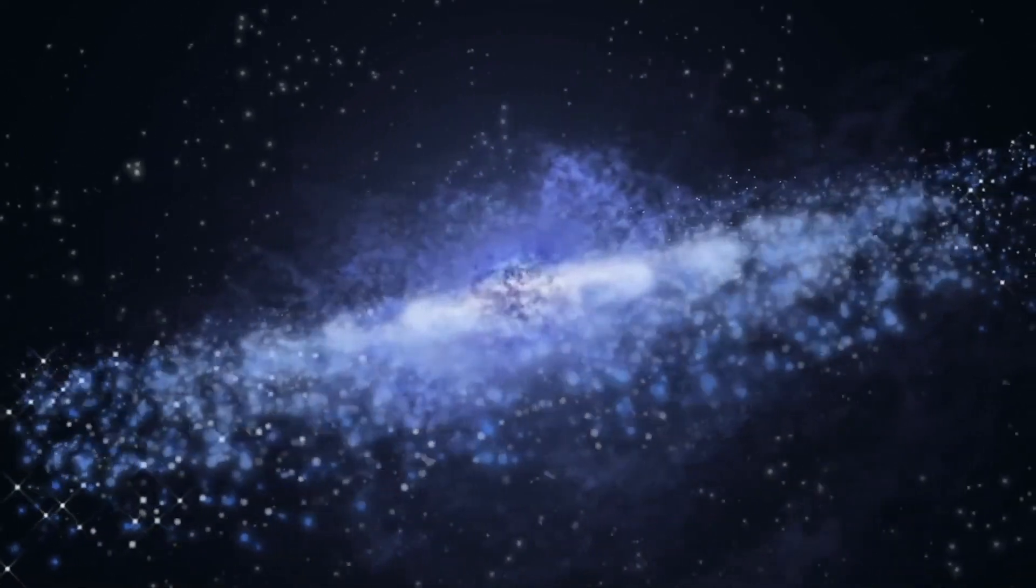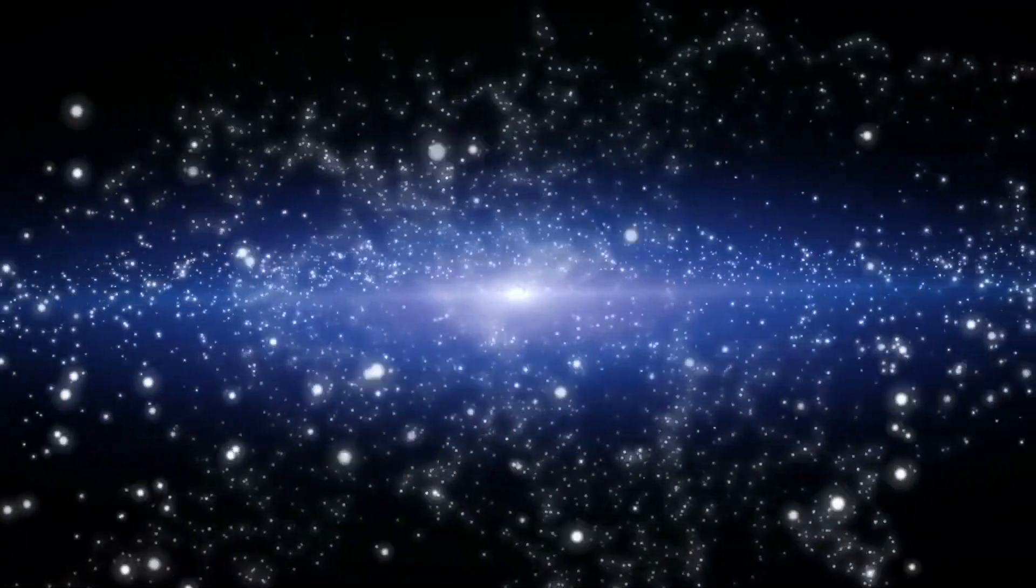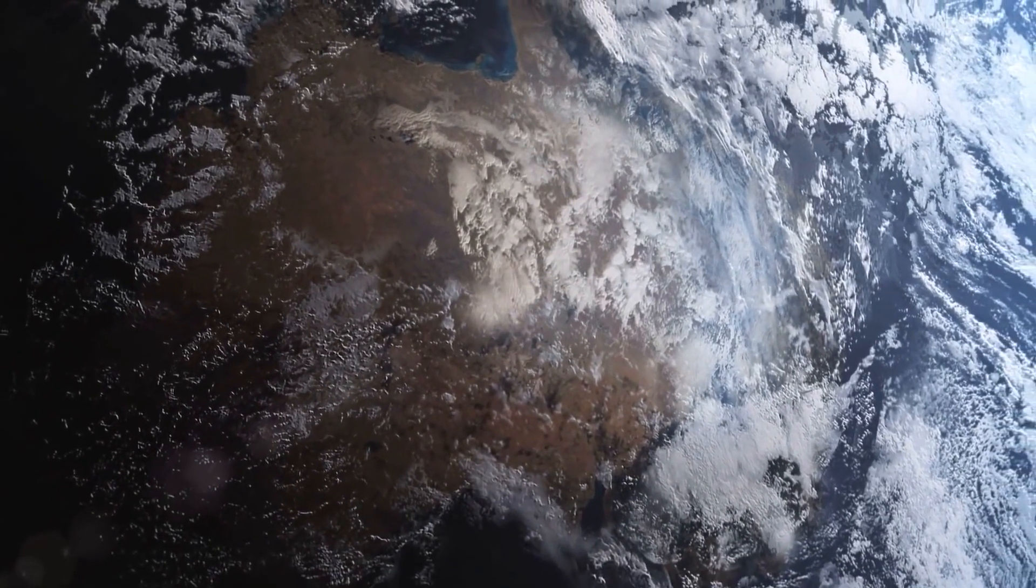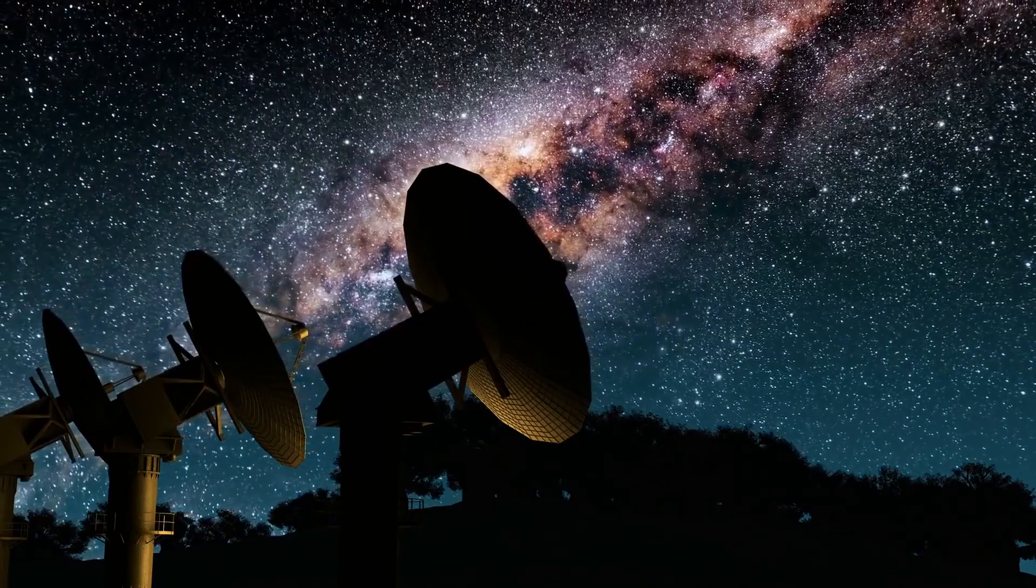As the cloud collapses, the material at the center begins to heat up. Known as a protostar, it is this hot core at the heart of the collapsing cloud that will one day become a star.